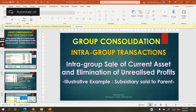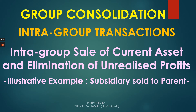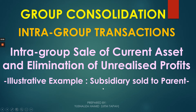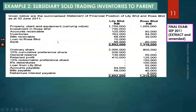Assalamualaikum and welcome back to our discussion on intragroup transactions. Our focus today is on intragroup sale of current assets and elimination of unrealized profit. I'm going to share an illustrative example where the subsidiary is the party selling the current asset — trading inventories — to the parent. You need to remember: intragroup transactions must be eliminated and must not be reported in the group or consolidated financial statement.